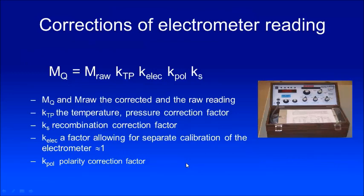The corrected electrometer reading M_Q for user beam quality Q is the raw meter reading in nanocoulombs corrected for temperature-pressure, polarity correction, recombination correction, and if applicable, the electrometer calibration factor.